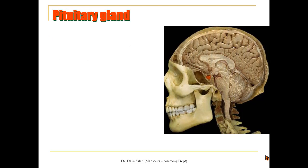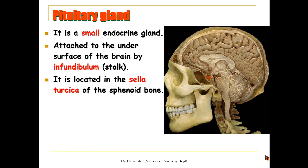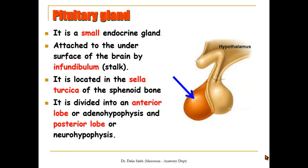For the anatomy of the pituitary gland, it is a small endocrine gland that is attached to the undersurface of the brain by an infundibulum or stalk. It is located in the sella turcica, which is a depression in the sphenoid bone. Anatomically it is divided into the anterior lobe or adenohypophysis, and the posterior lobe or neurohypophysis.